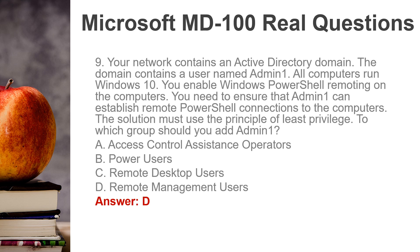Question 9. Your network contains an Active Directory domain. The domain contains a user named Admin1. All computers run Windows 10. You enable Windows PowerShell remoting on the computers. You need to ensure that Admin1 can establish remote PowerShell connections to the computers. The solution must use the principle of least privilege. To which group should you add Admin1? A. Access Control Assistance Operators. B. Power Users. C. Remote Desktop Users. D. Remote Management Users. Answer: D.